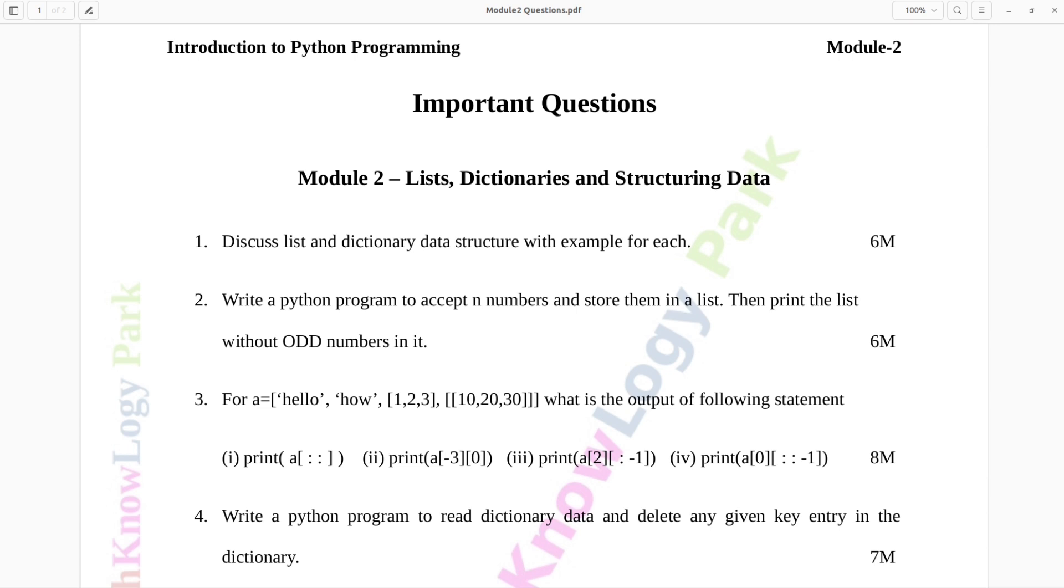Question number one. Discuss list and dictionary data structure with example for each. Six marks.